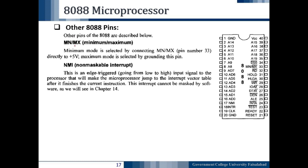The MN/MX pin — Minimum or Maximum mode selection — is pin number 33. For minimum mode, we connect pin 33 directly to +5 volts. For maximum mode, we ground this pin.